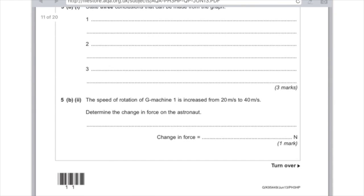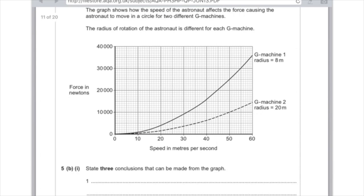The speed of rotation of G machine 1 is increased from 20 metres per second to 40 metres per second, determine the change in force on the astronaut. Right, so we're looking at G machine 1, so that's this line, and we know that the speed has increased from 20 seconds to 40 seconds. So we're looking along this line here, so let's take it up. Sorry about how wonky it is. And then just read across on the y-axis here and here, and work out how big this is. So read it off using the squares, and you'll see that the answer here is 12,000 newtons.